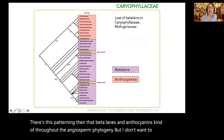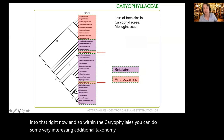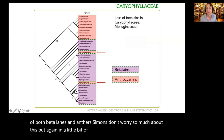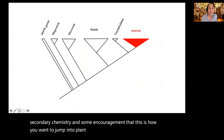Across the angiosperms the color red can evolve through either anthocyanins or betalains. Within the caryophyllales this red, purple, and pink color comes from betalains. You can map this trait across the phylogeny and see the patterning of betalains versus anthocyanins. This is a little foreshadowing for when we get to secondary chemistry, and an encouragement if you want to jump into plant taxonomy.